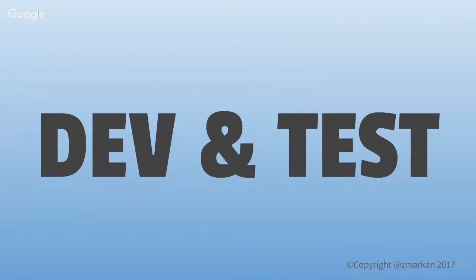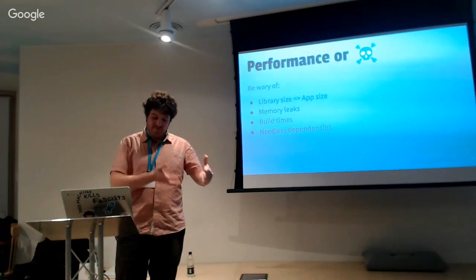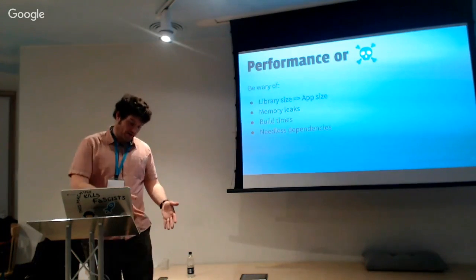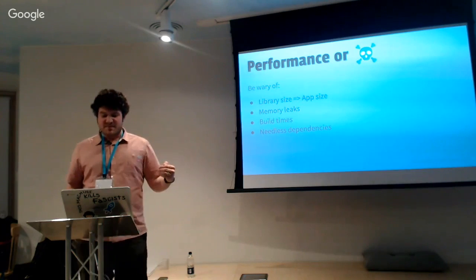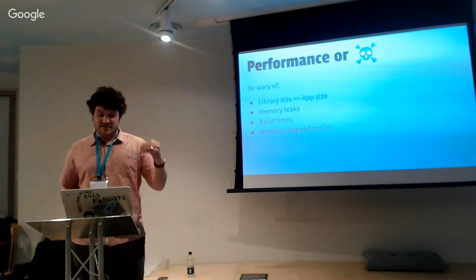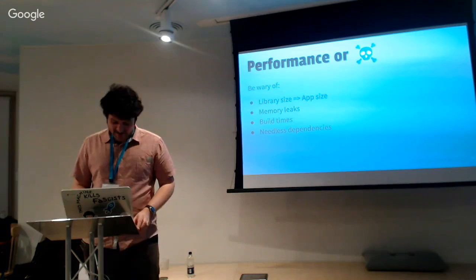The good thing about development is there aren't really any new things here. The main things to worry about are that libraries do come with costs. Every method in the library goes into the app unless people use obfuscation, and people normally don't. The bigger the library, the bigger the app; the bigger the app, the longer the compile times; the longer the compile times, the more pissed off the developers. If the library brings in dependencies it doesn't really need, that's affecting build time and library size. And obviously avoid things like memory leaks — no one likes them, especially if they're out of your control.